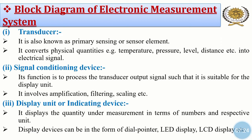The last element is the display unit or indicating device. It displays the quantity under measurement in terms of numbers and respective unit. For example, if we measure voltage, it displays 5 volts — so 5 is the number and volts is the unit. Display devices can be in the form of dial pointer, LED display, LCD display, etc.